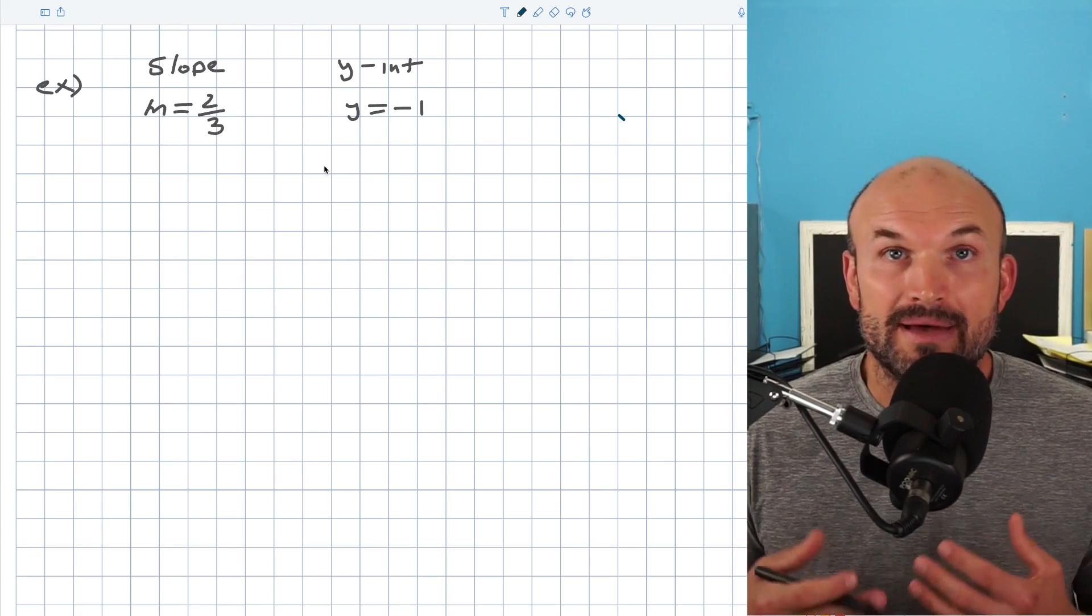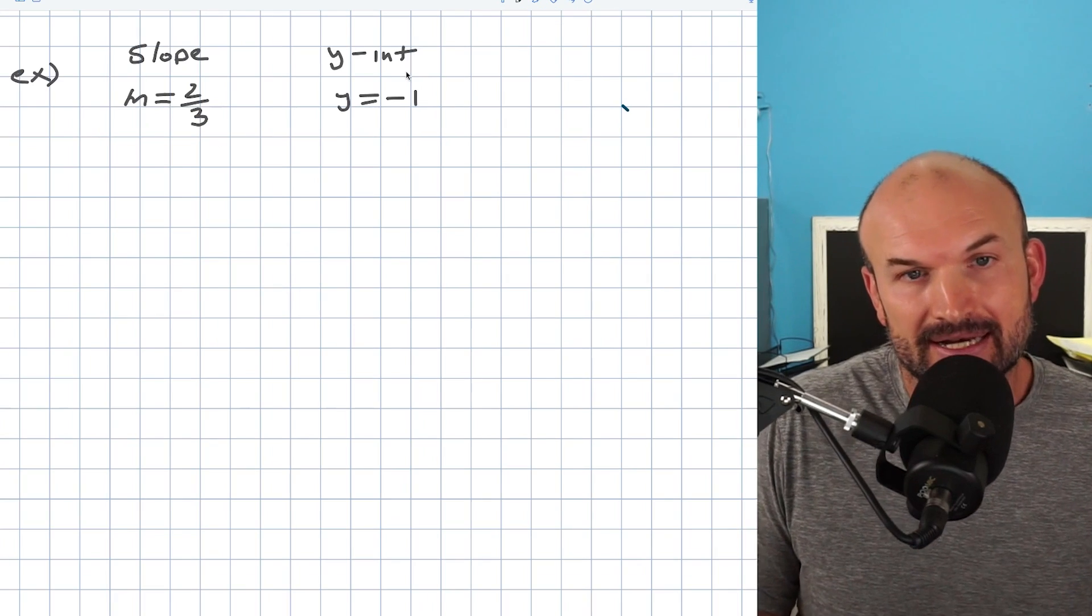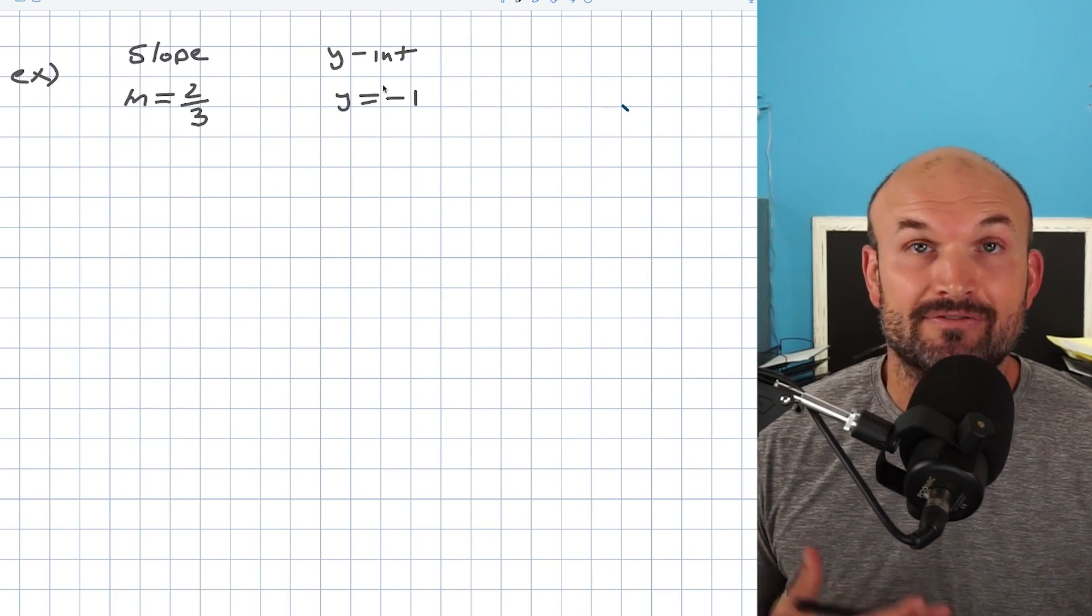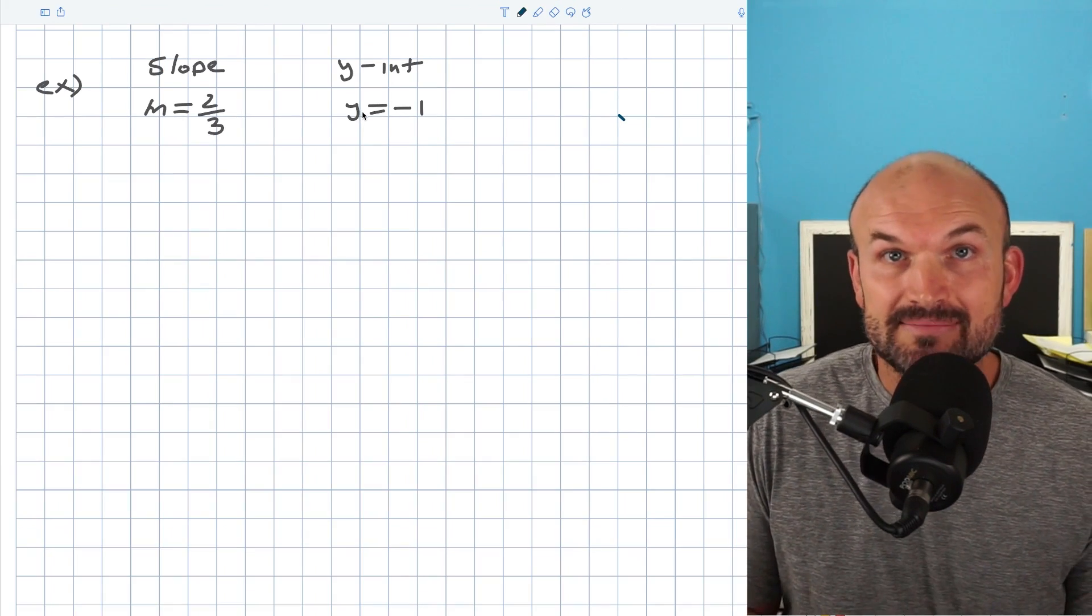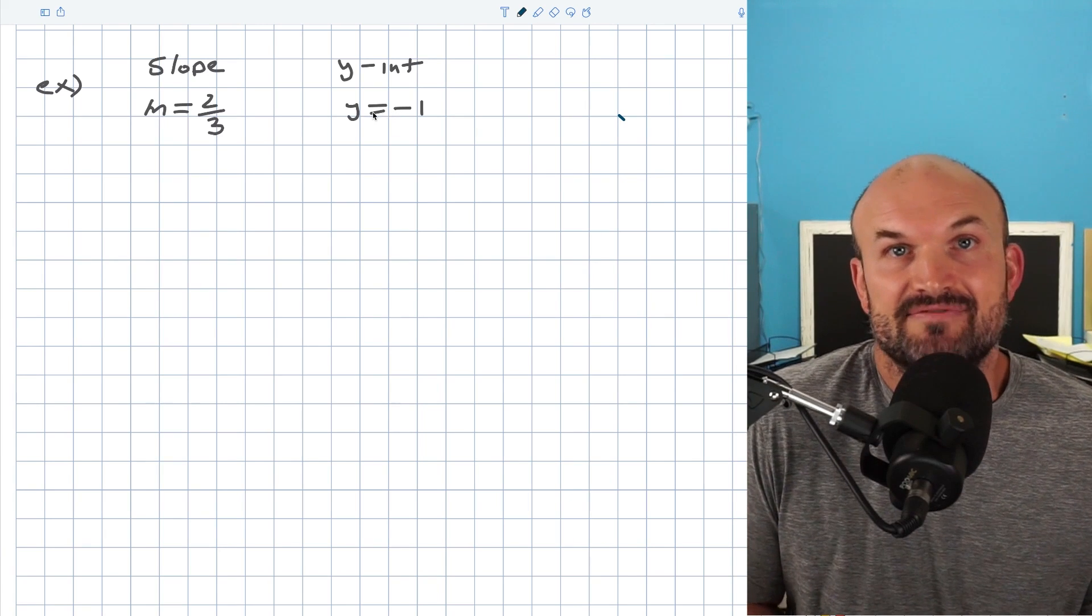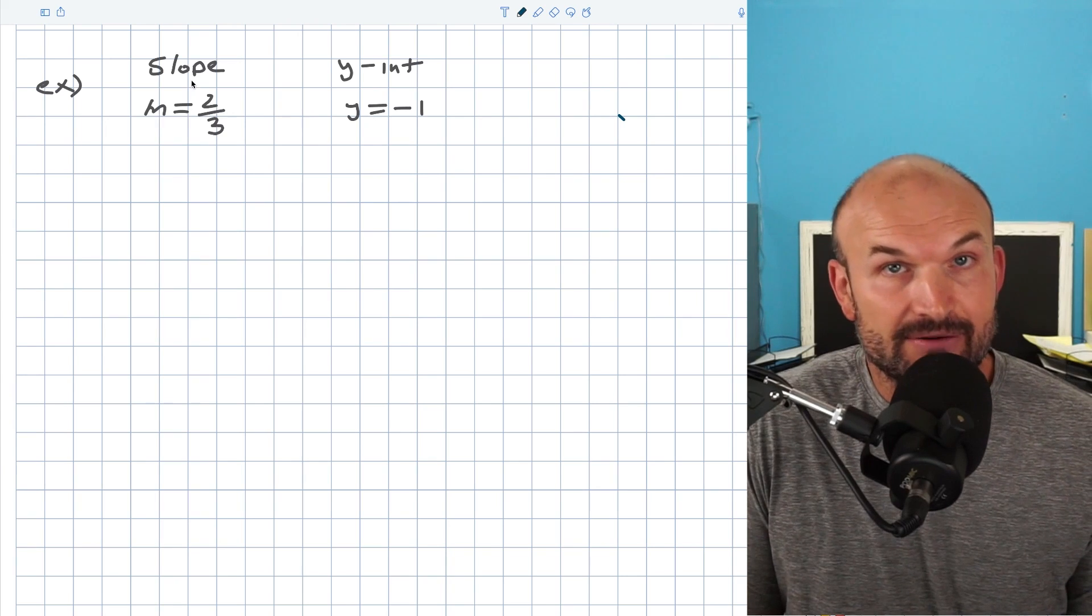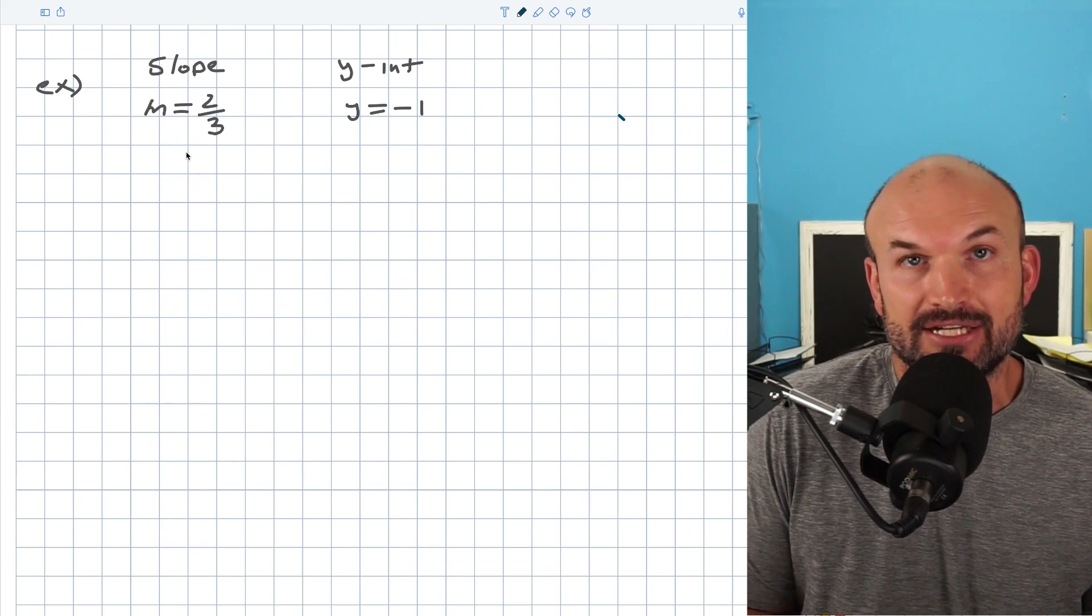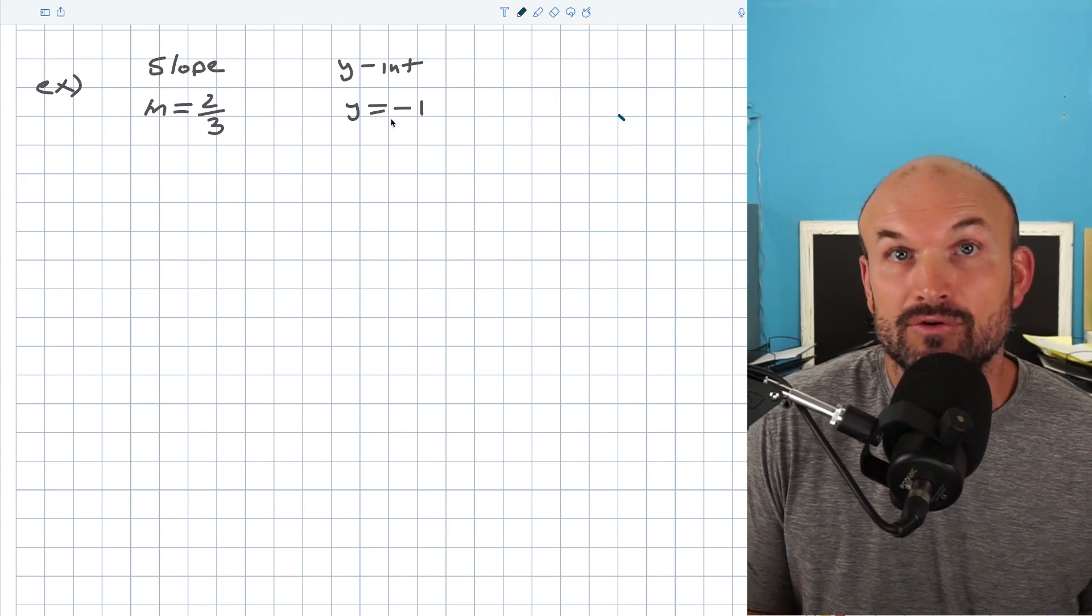Now again, remember your slope m represents your slope, and b represents your y-intercept. The y-intercept is where the graph crosses the y-axis. So sometimes it will be represented as a b, but sometimes it might be represented as y equals negative one, because that's the value on the y-axis. So if I want to write an equation of a line given my slope and the y-intercept, all I simply need to do is replace my two-thirds for m and my negative one for the b.